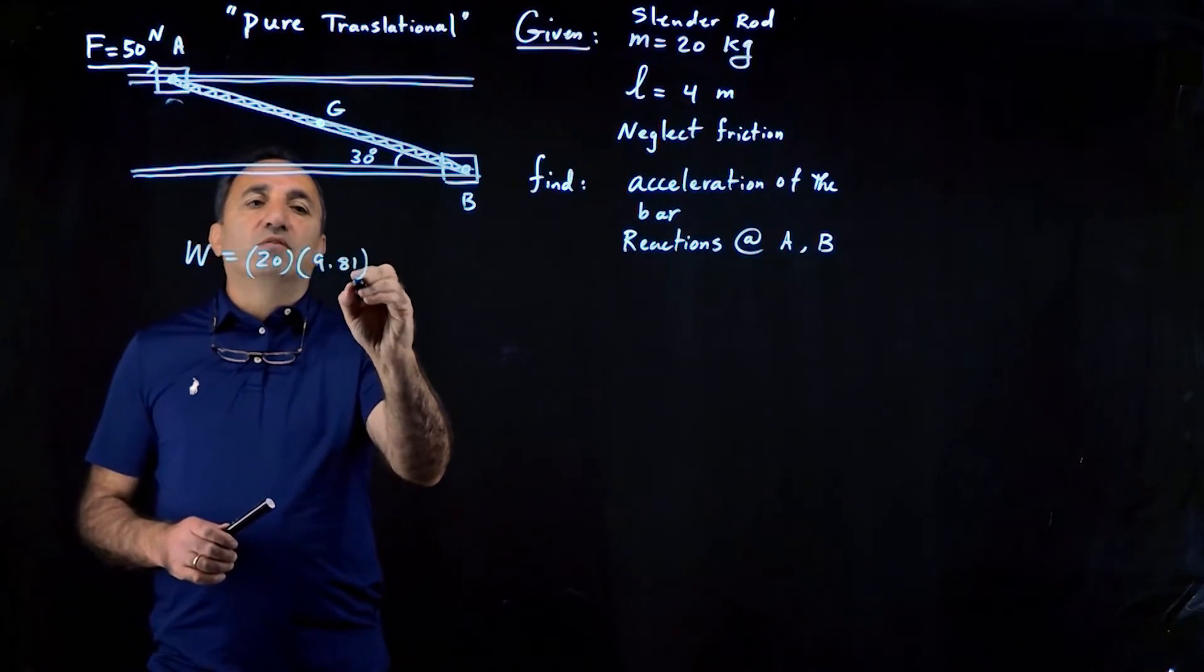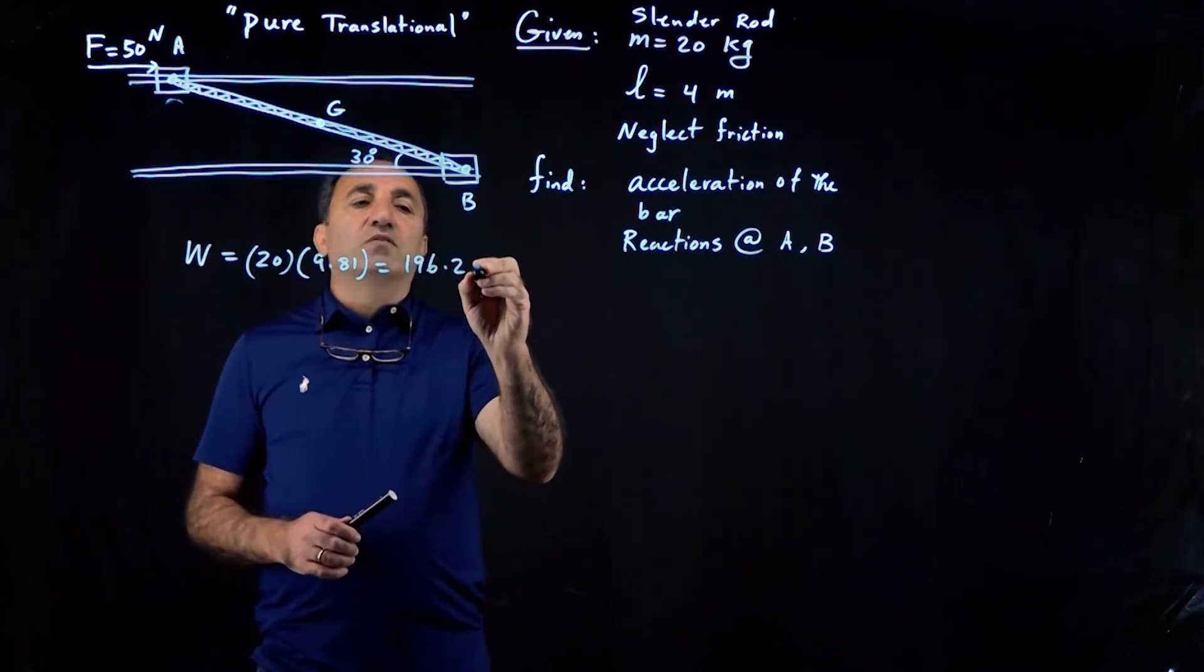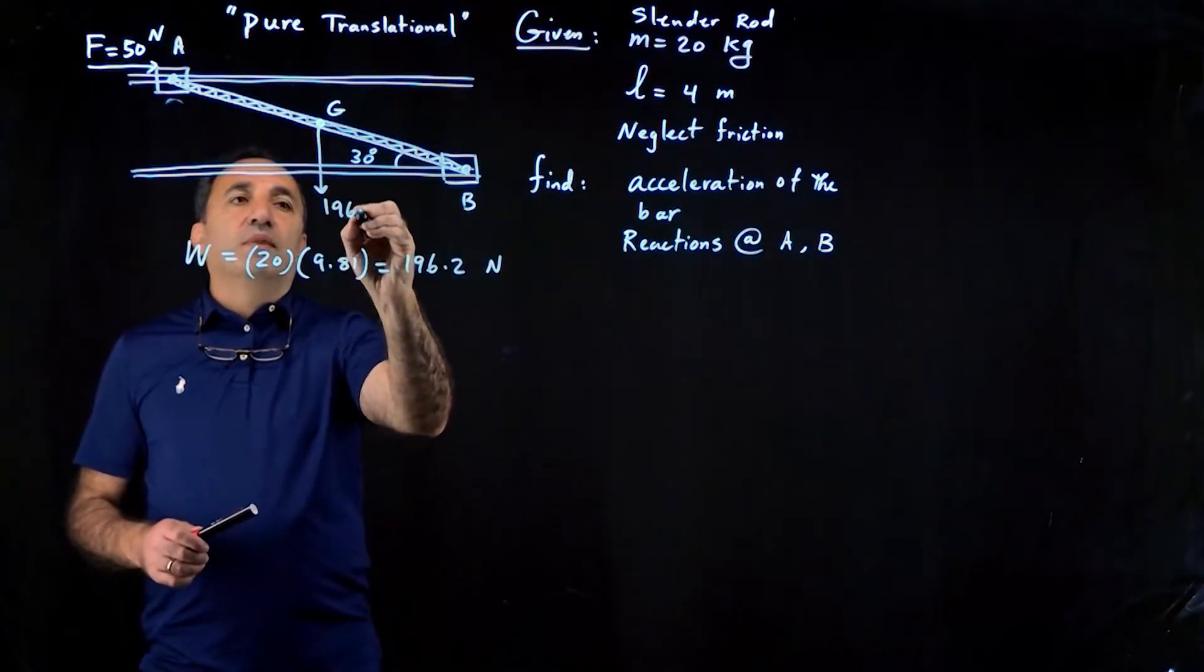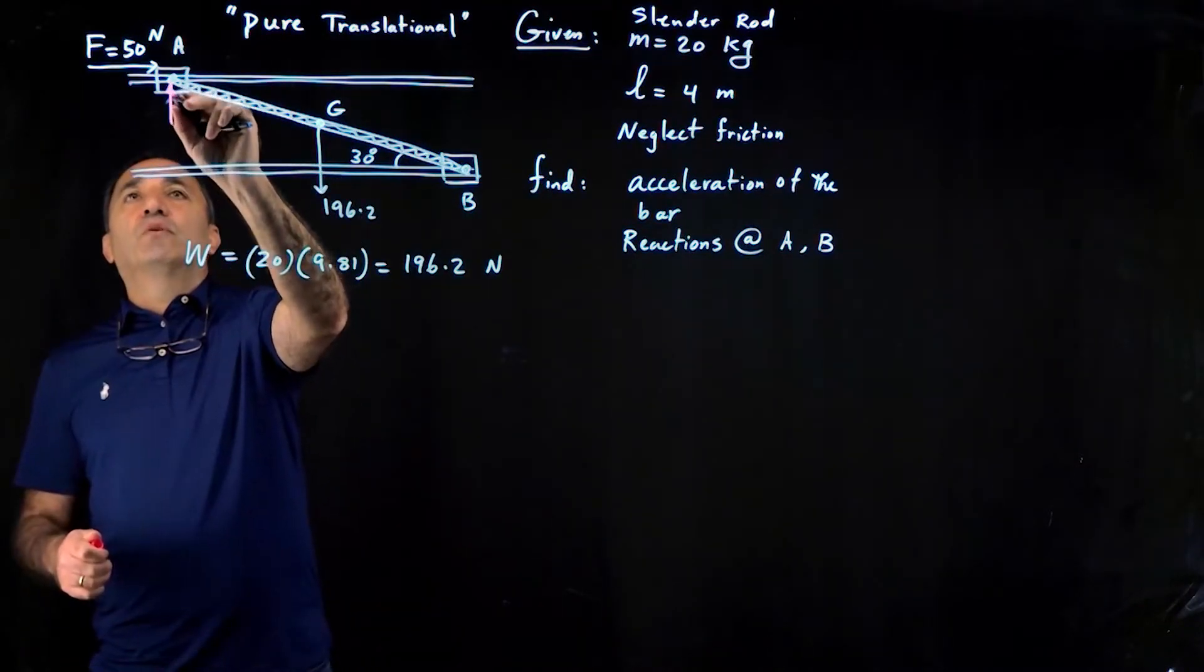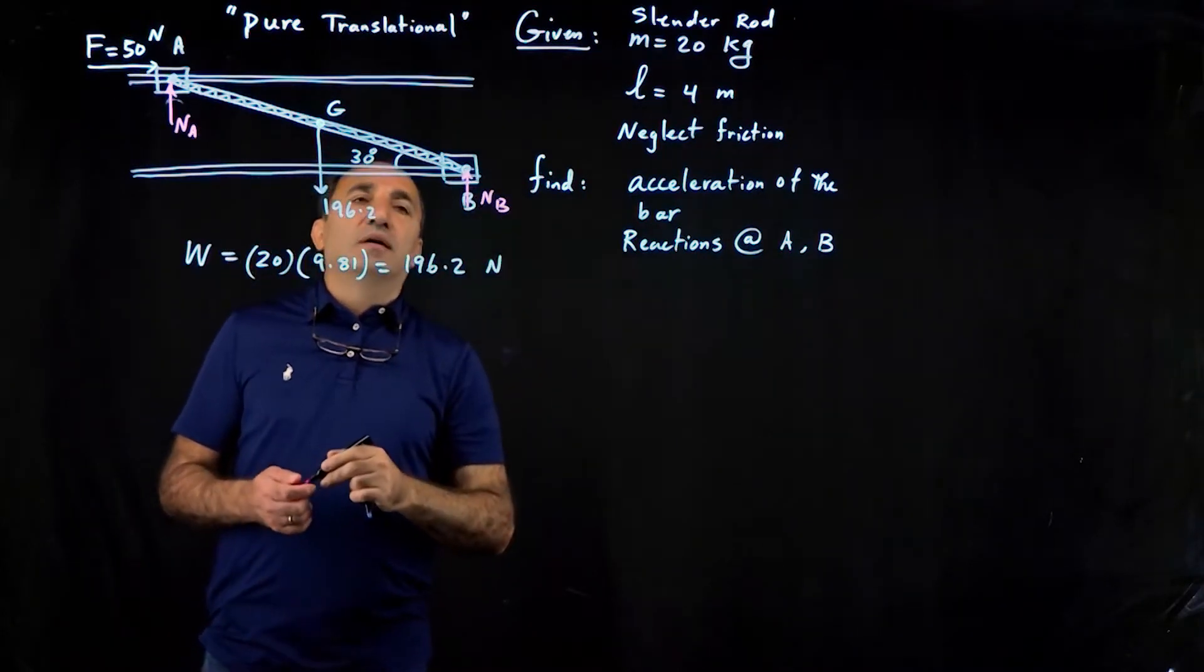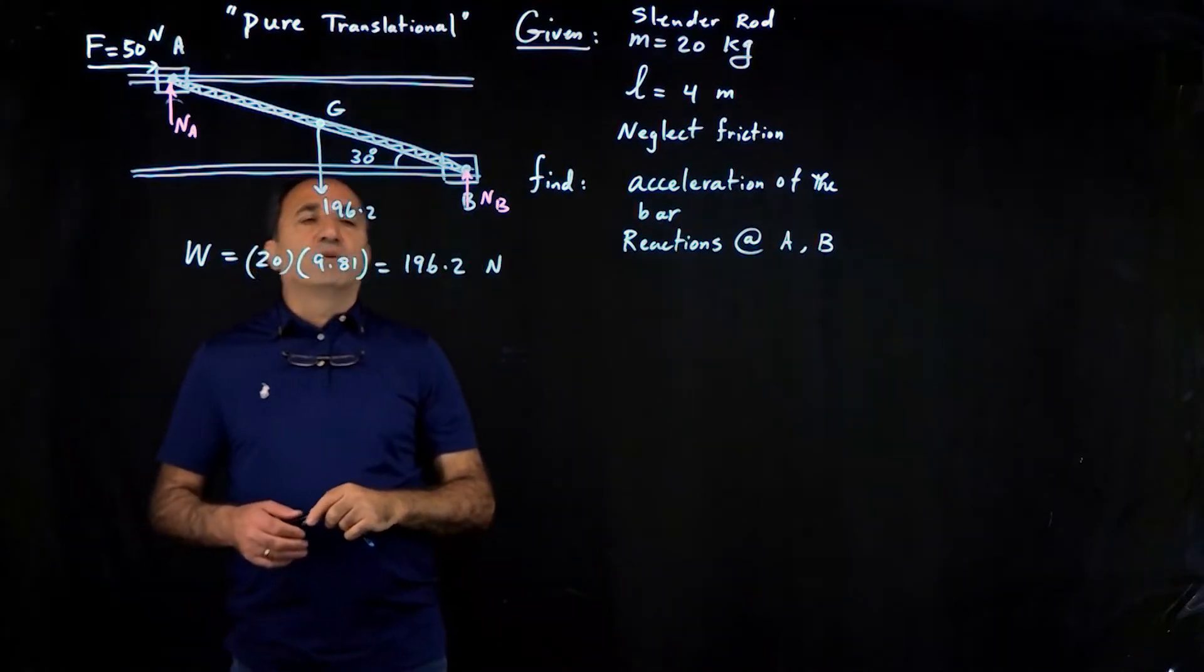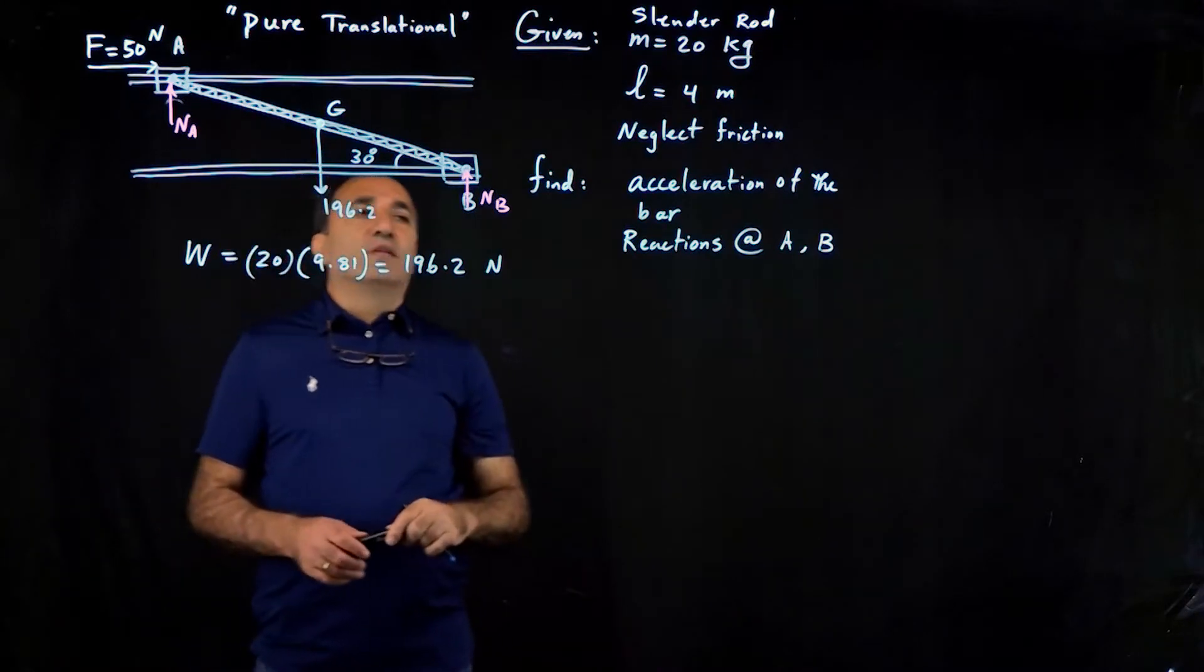Fortunately, this is in metric system, which makes things much easier. So 196.2 Newtons. And then there would be a normal reaction, I'm going to call it Na here and one reaction here at B. And of course, there is no friction. So basically, that's your free body diagram with two unknowns.